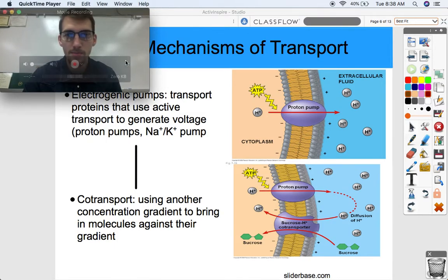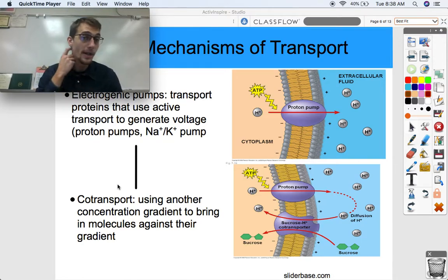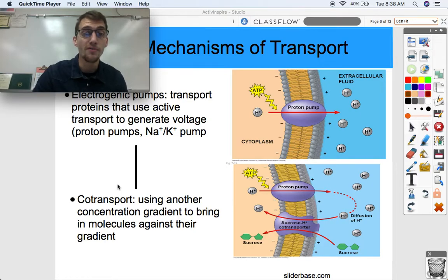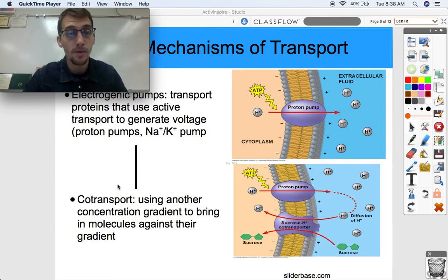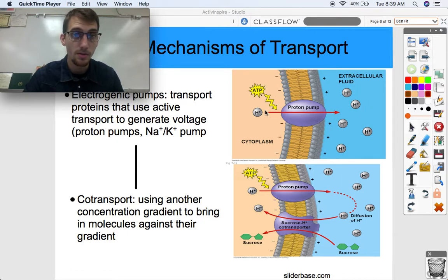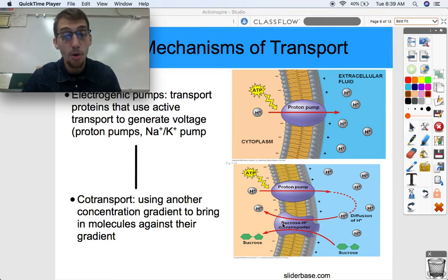As a recap of our types of active transport that we discussed earlier in the unit, electrogenic pumps are a form of active transport. They generate voltage. The sodium potassium pump, the very famous one that we talked about in a previous video, maintains the membrane potential, making sure sodium stays on the outside, potassium stays on the inside. And proton pumps, which are membrane proteins that pump out hydrogens into the extracellular fluid outside of the cell in order to establish a proton gradient.